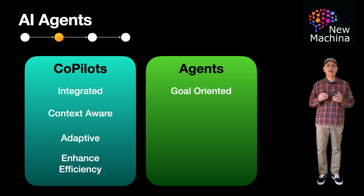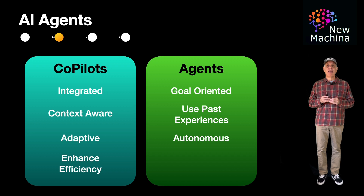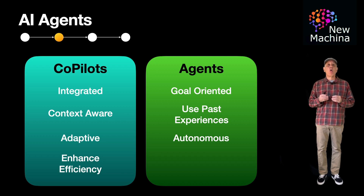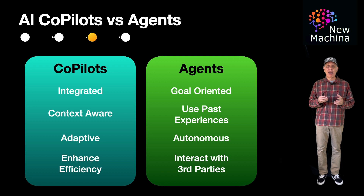Similar to co-pilots, AI agents incorporate machine learning techniques to improve their performance over time by learning from past experiences. AI agents are autonomous decision makers that can independently make decisions and take actions based on their programming and learned experiences, without requiring human intervention. AI agents interact with their environment, which can include third-party software systems, physical surroundings, or other users, to gather data and respond appropriately to achieve their goals.